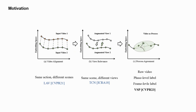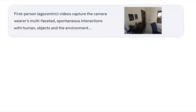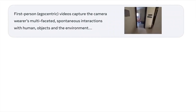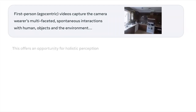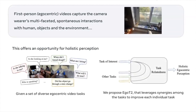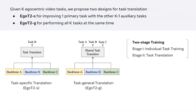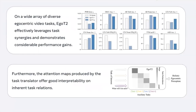Hi everyone, I'm happy to introduce our work today, Egocentric Video Task Translation. Traditionally, different video understanding tasks are treated in isolation. However, in wearable cameras, the immersive egocentric perspective of a person engaging with the world presents an interconnected web of video understanding tasks, offering an opportunity for holistic perception. Given a set of diverse egocentric video tasks, we propose EgoT2 that beneficially leverages task synergies to improve each individual task. Specifically, we propose EgoT2S for improving one primary task of interest and EgoT2G for jointly optimizing all K tasks. Experimental results demonstrate the superiority of EgoT2, and it also offers good interpretability on inherent task relations.